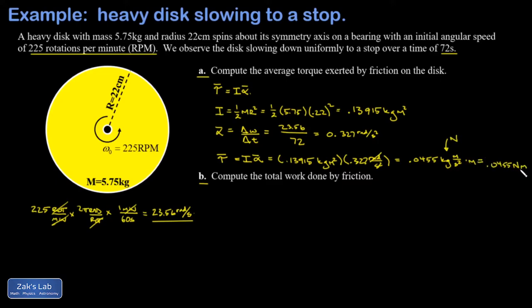Next, I want to get the total work done by friction. The easiest way to do this is to just think about the energy concepts and say: what happened to all the original rotational kinetic energy? It's all vanished by the end of the problem, and it's because friction did negative work on this disk and removed that energy.